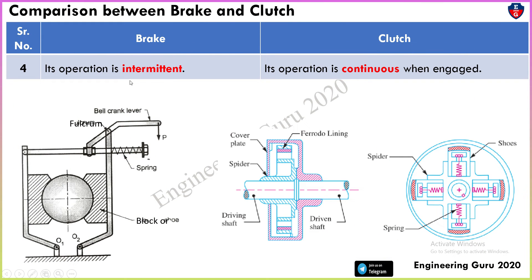For the fourth point, the operation of a brake is intermittent, while for a clutch, the operation is continuous when engaged.